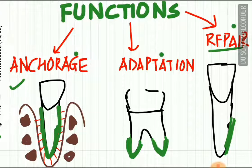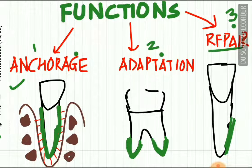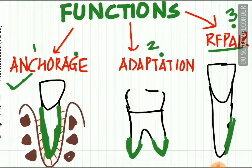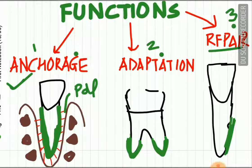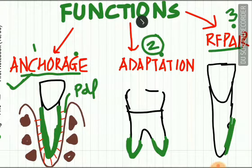Now let us see the functions of cementum. The three functions are anchorage, adaptation, and repair. The green layer of cementum on the root acts as a medium for attachment of the red-colored PDL fibers to the tooth socket, thus anchoring the tooth to the alveolar bone socket. The second function is adaptation.